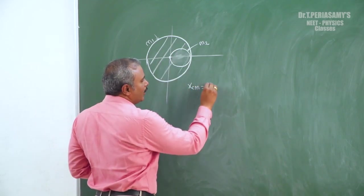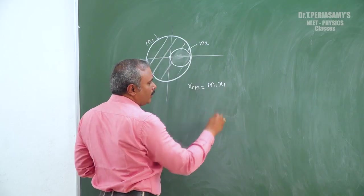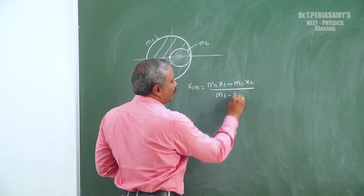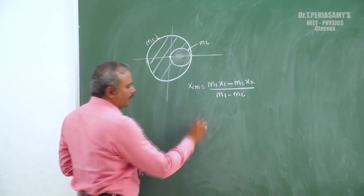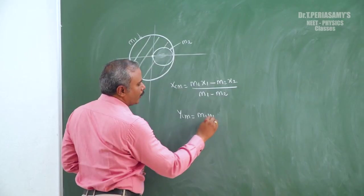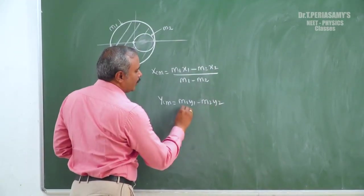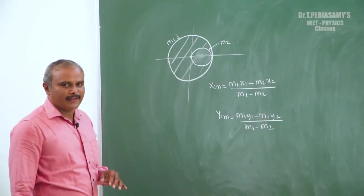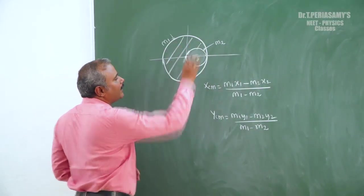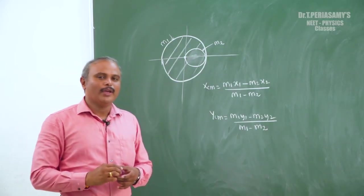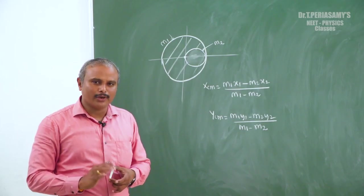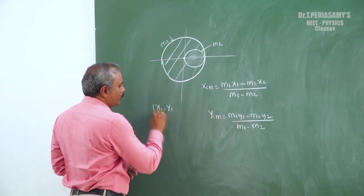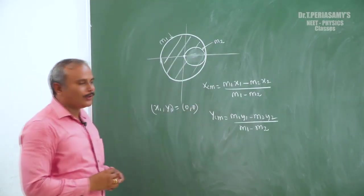The formula is: x center of mass equals m1 x1 minus m2 x2 divided by m1 minus m2. We fix the coordinate axis at the center of the original body. Why? Because then x1 and y1 are equal to zero, which makes it easy to solve.